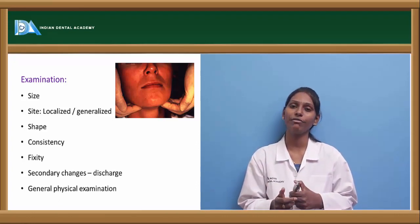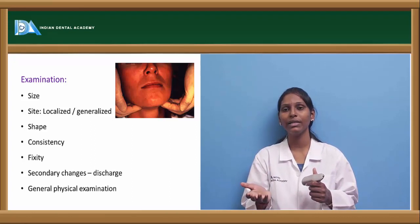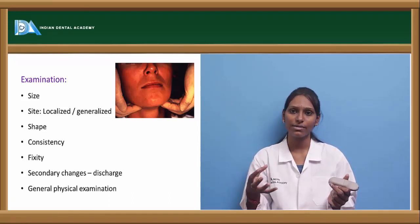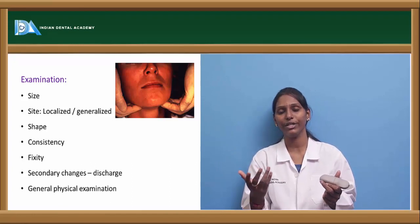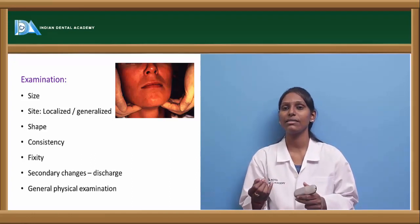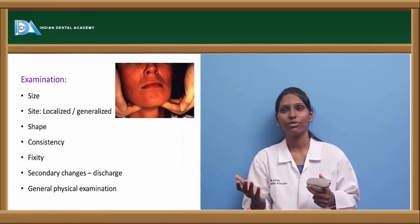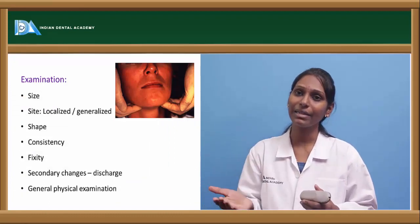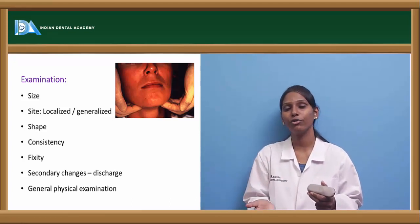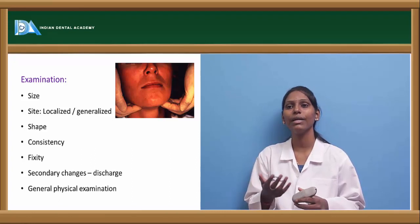Coming to the shape of the lymph node — lymph nodes are roughly ovoid in shape normally. Whenever they transform into a spherical shape, malignancy can be suspected, as infiltration of cancer cells leads to this change in shape. Next is consistency: inflammatory origin lymphadenopathy is soft. In chronic inflammation it is soft to firm. In benign or malignant tumors it is stony hard. In lymphomas it is usually discrete and rubbery in consistency.